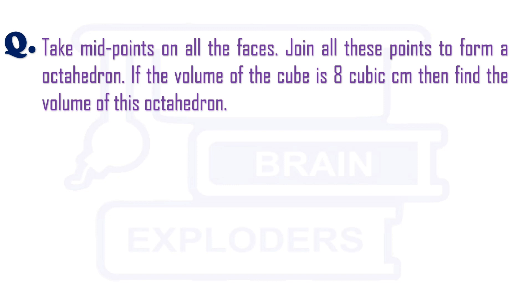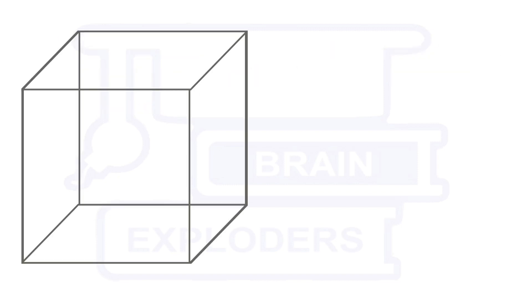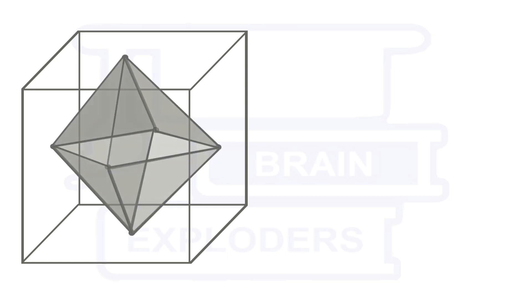Suppose this is a cube. Now, take the midpoints of all the faces on this cube. Join all these points to form an octahedron. Now, here, the volume of cube is 8 cubic centimeter, then find the volume of octahedron.